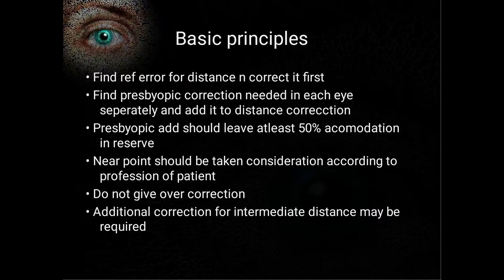First we find and correct the refractive error for distance, then find the presbyopic correction needed in each eye separately and add it to the distance correction. The presbyopic add should leave at least 50% of accommodation in reserve. Reading habits, near point, and working distance according to the patient's profession and personal choice must all be considered. Over-correction should be avoided as it induces magnification, diplopia, and headache.